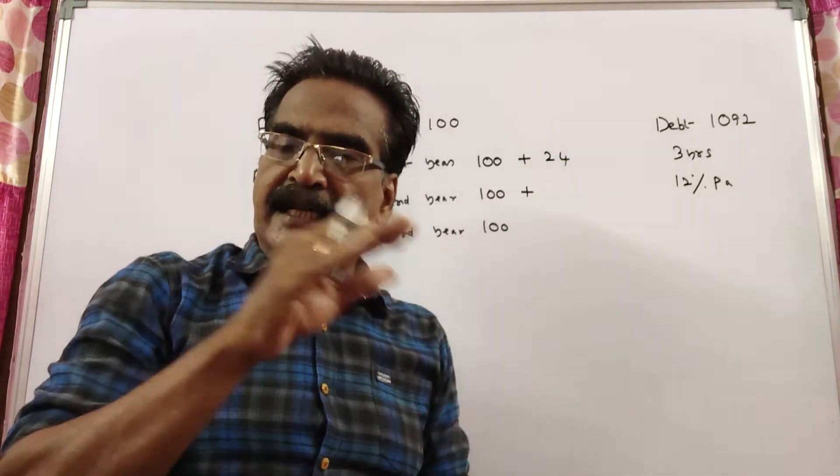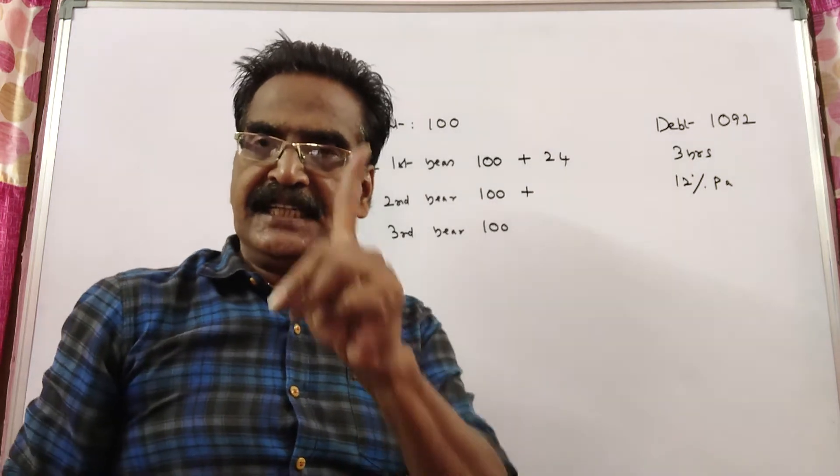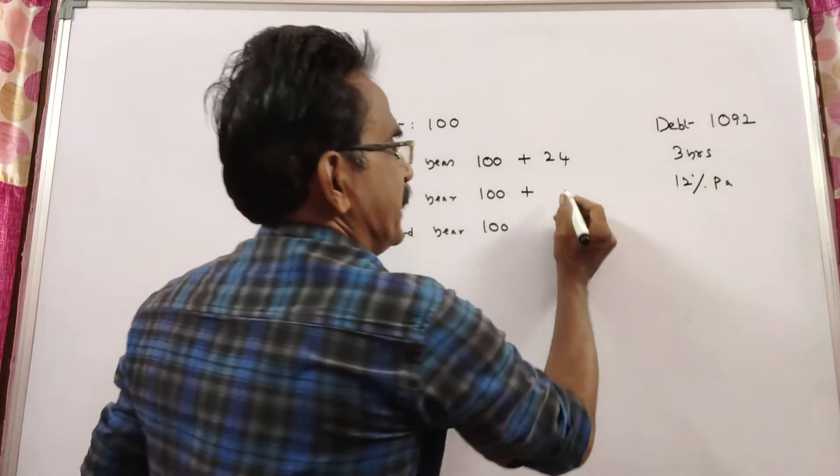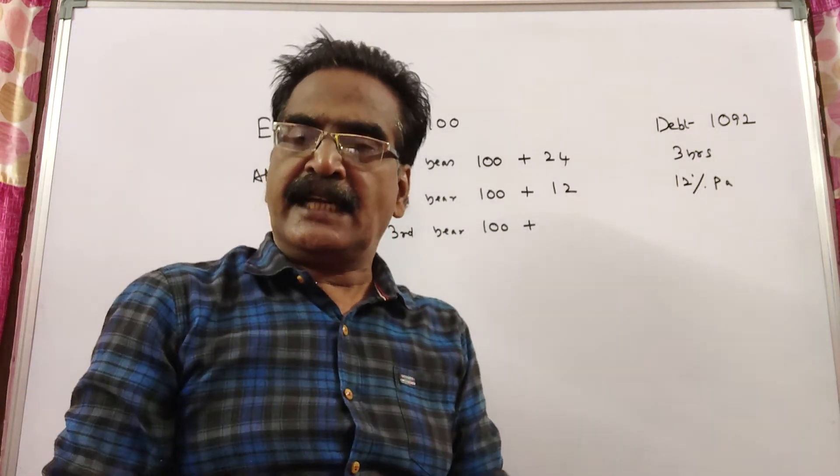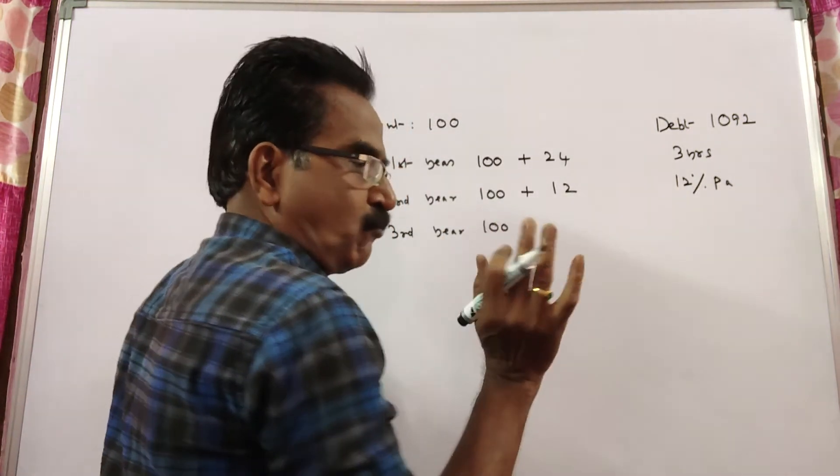The installment you pay at the end of the 2nd year will fetch interest only for 1 year, that is Rs. 12. And the installment you pay at the end of the 3rd year will fetch no interest; the period is over.